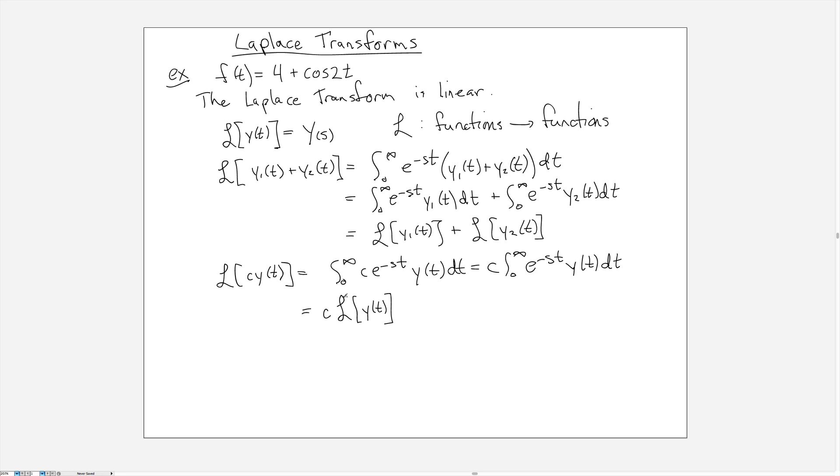And these two combined tell me that the Laplace transform is linear. And it also tells me that if I'm calculating the Laplace transform of f(t), then really I just have to calculate the transform of 4 and add to that the Laplace transform of cosine 2t, and I get the same answer.